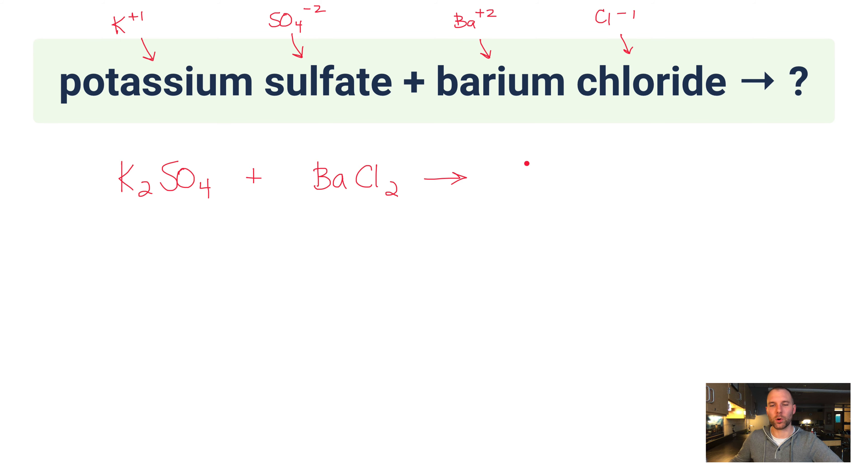Let's come up with the products now. Again, it doesn't matter which order you put the two products in. But let's put barium with sulfate. This is a +2 with a -2, so I just need one of each. That's BaSO4.